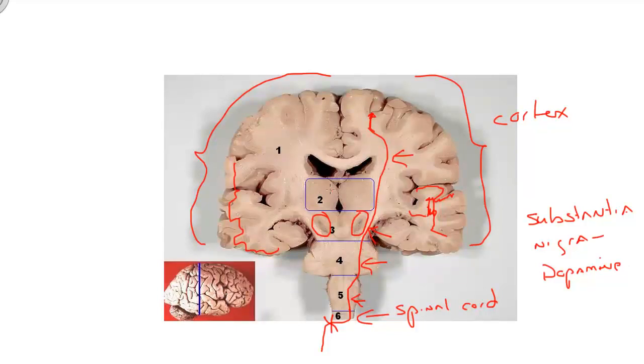Number two here is the thalamus. And so the key element to thalamus that's important is it is the gateway for all discriminative information that makes it into cerebral cortex. And we're going to find in thalamus collections of neurons called nuclei that send their axons to specific regions of cortex called cortical areas.